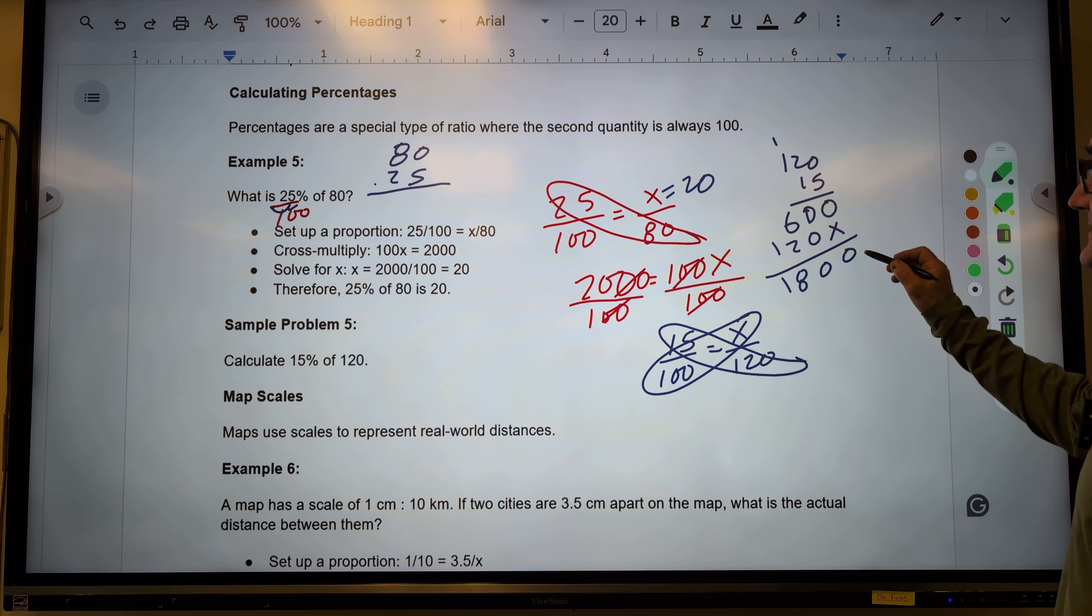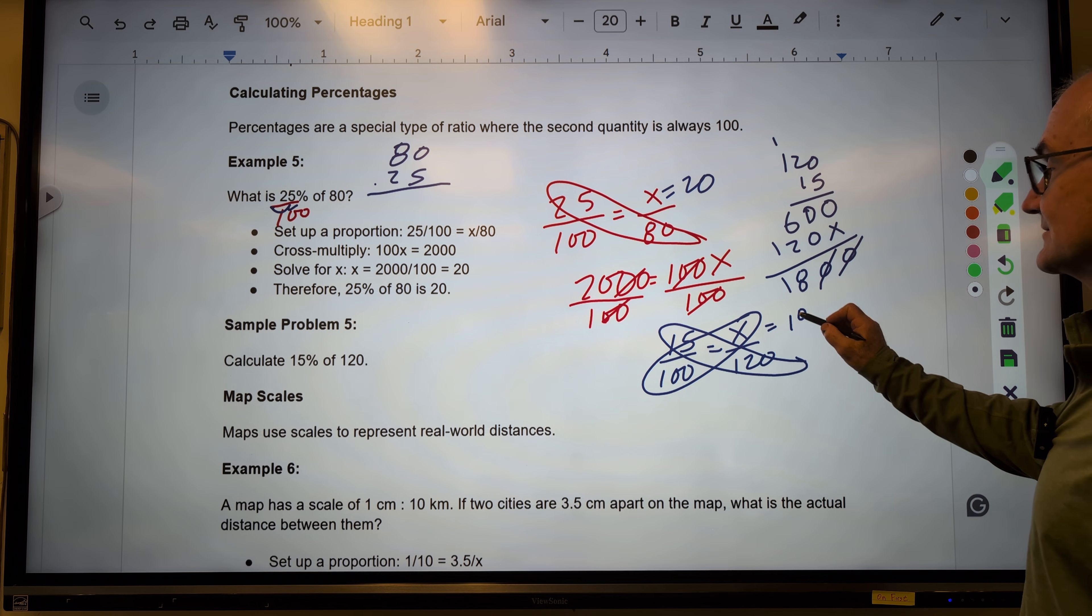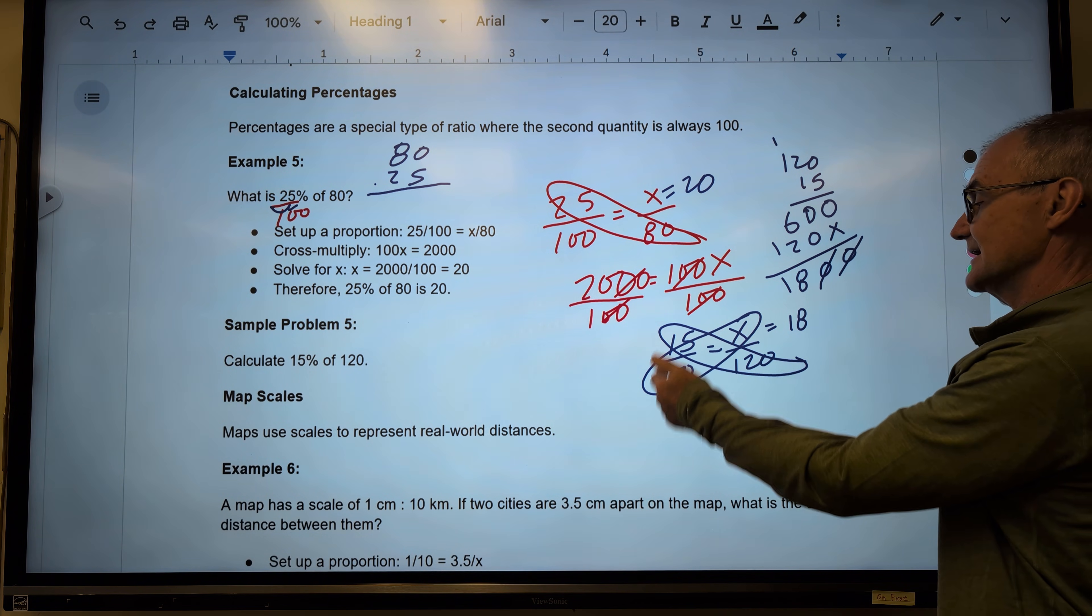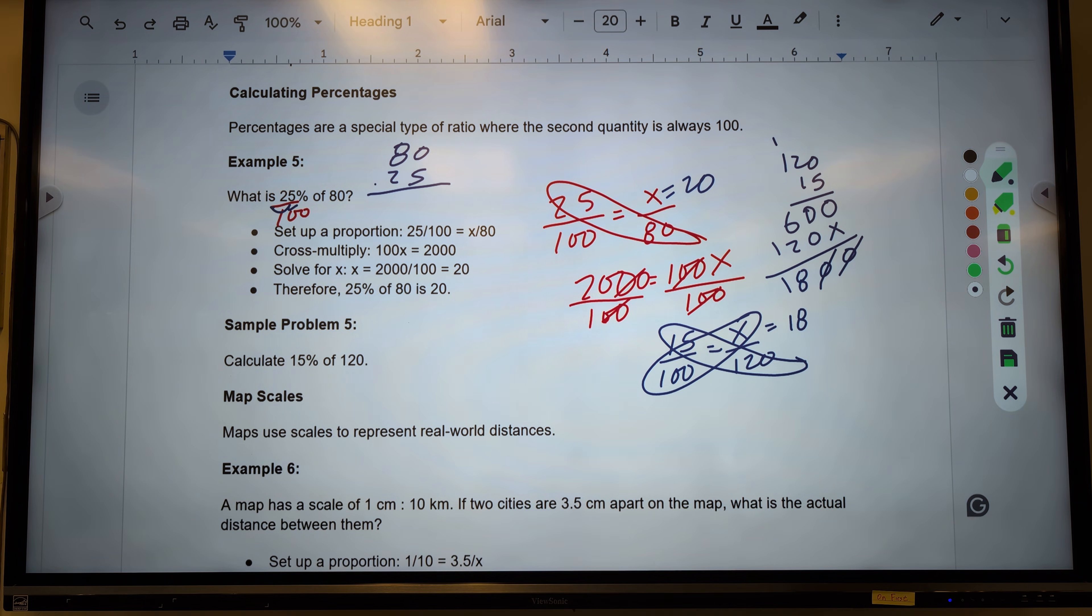So I divide both sides by 100. That's going to drop two zeros out. And x is equal to 18. Quick check. 15 is to 100 as 18 is to 120. That looks about right.